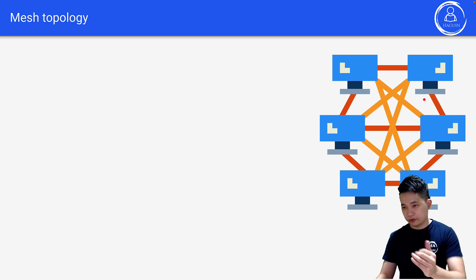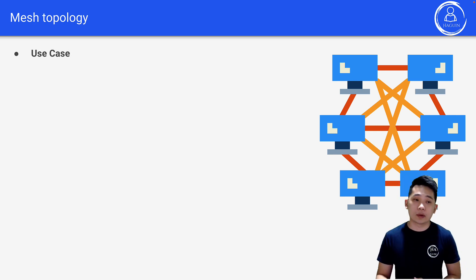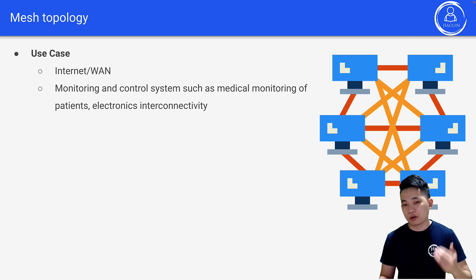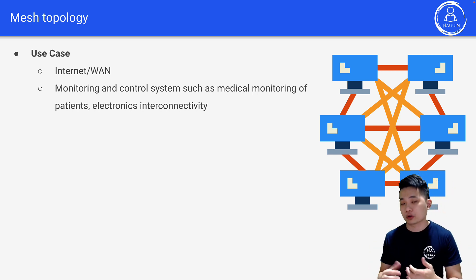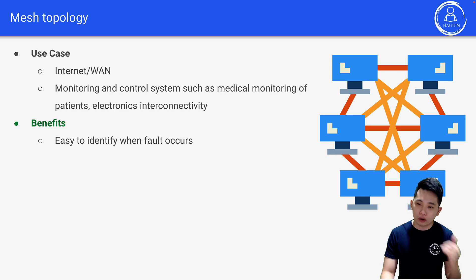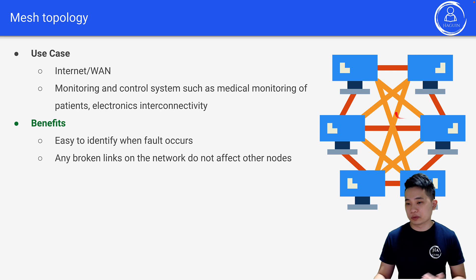In mesh topology, all nodes are connected to each other. It is used in the internet, wide area networks (WAN), monitoring and control systems such as medical patient monitoring in hospitals, and electronics interconnectivity such as the Internet of Things and smart homes. A benefit is that it's easy to identify when a fault occurs, and broken links do not affect other nodes.